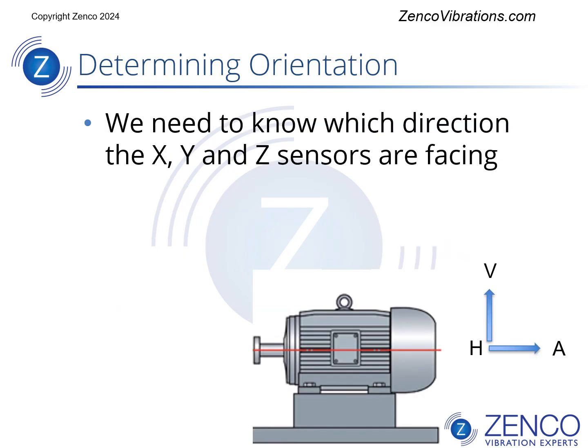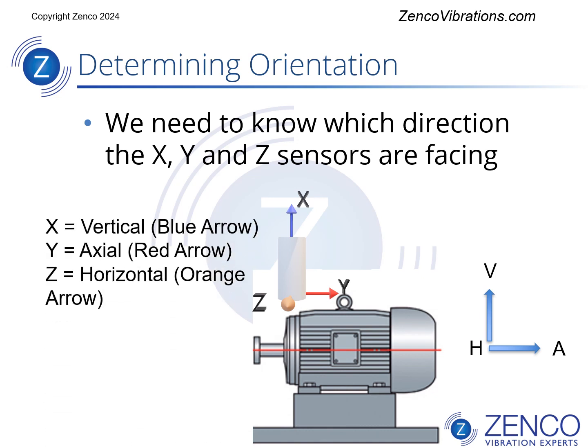Here's an example of a horizontal machine — we're going to define the orientation of this sensor. In this case, the X sensor with the blue arrow is pointing in the vertical direction, the Y sensor with the red arrow is pointing in the axial direction, and the Z sensor with the orange arrow is pointing towards us, or horizontal. We would define this orientation as V, A, H. So instead of X, Y, Z, the first channel X is V, the second channel Y is A, and the third channel Z is H.